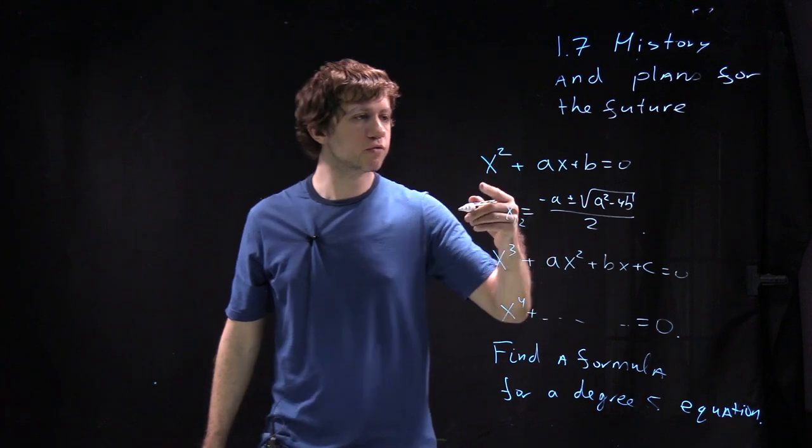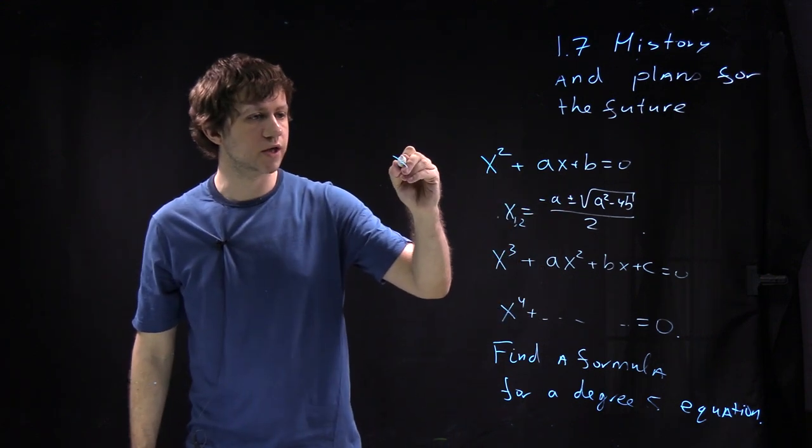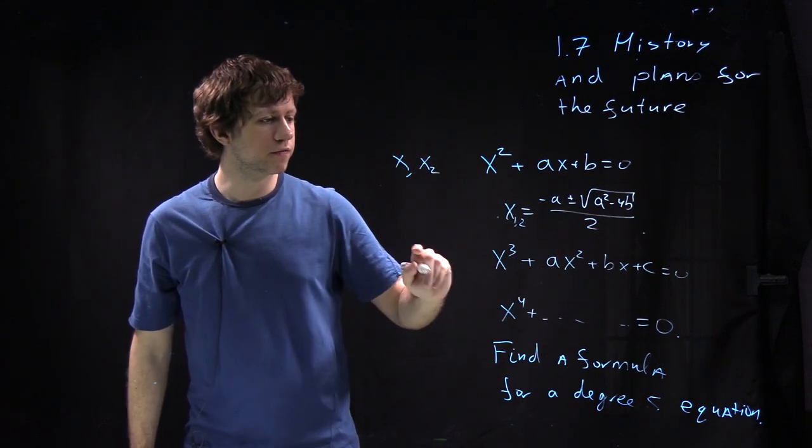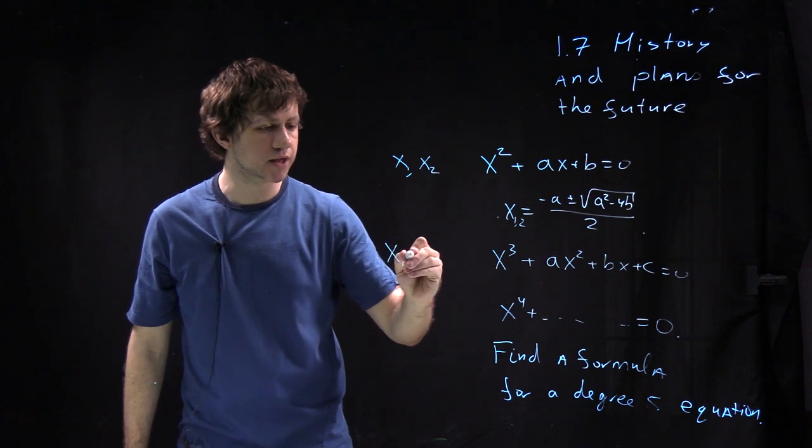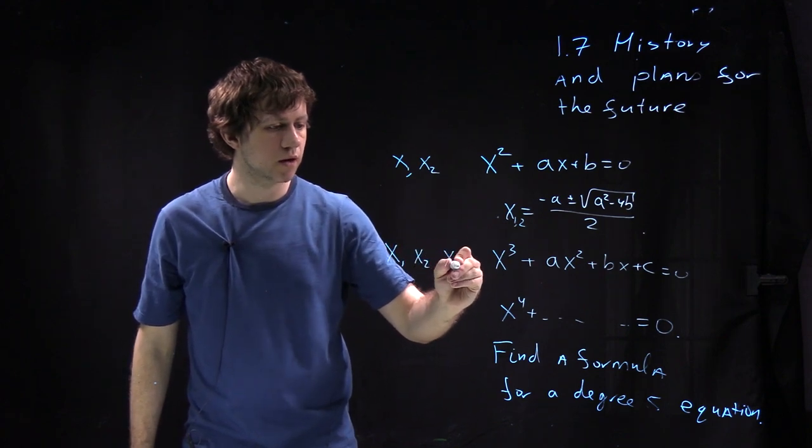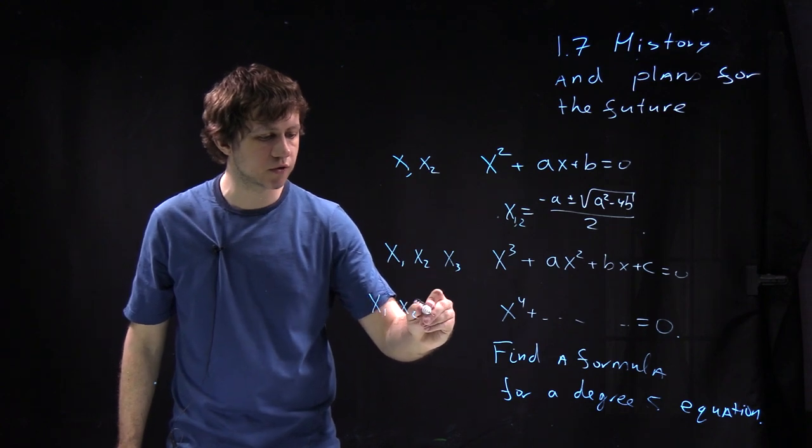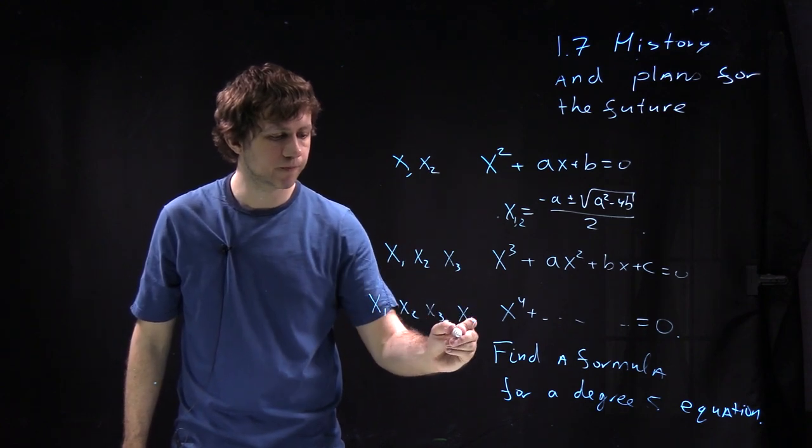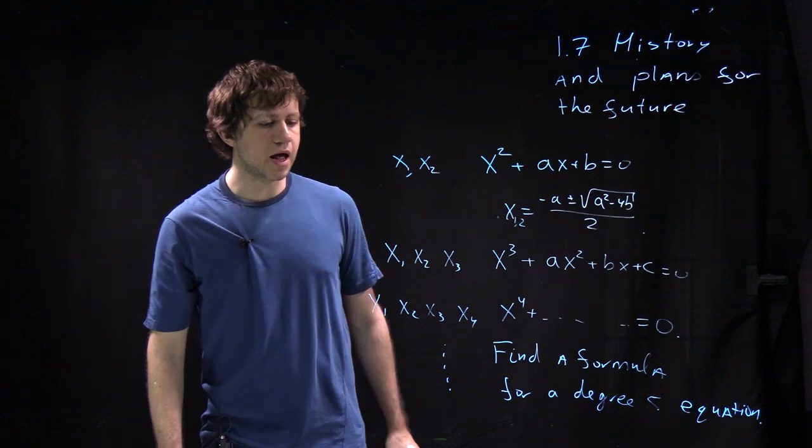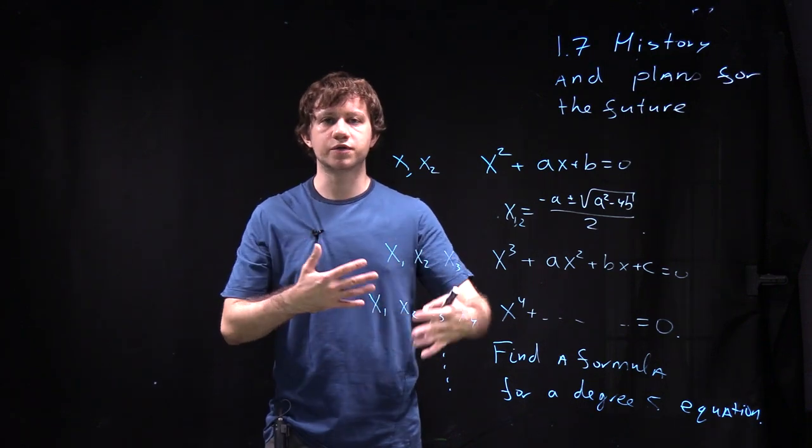was that one should look at roots of these equations and permutations of these roots. So equation of degree 2 has 2 roots, x1, x2. Equation of degree 3 has 3 roots, x1, x2, x3. Equation of degree 4 has 4 roots, x1, x2, x3, x4 and so on.